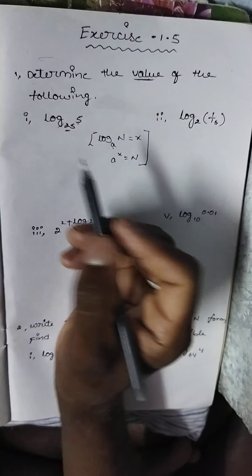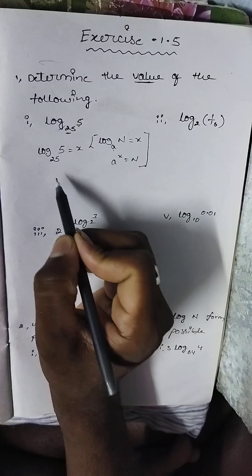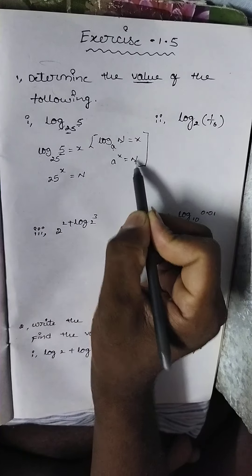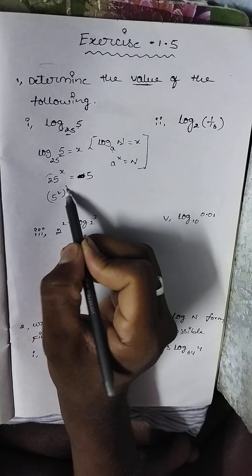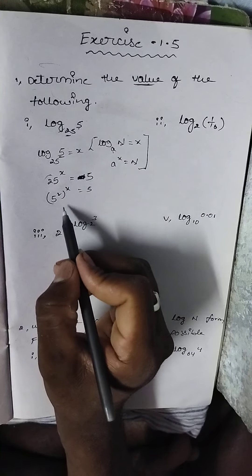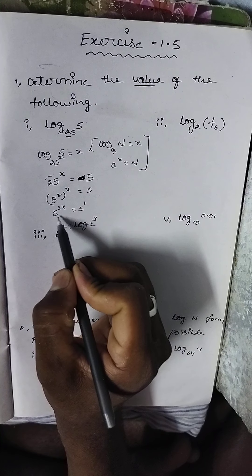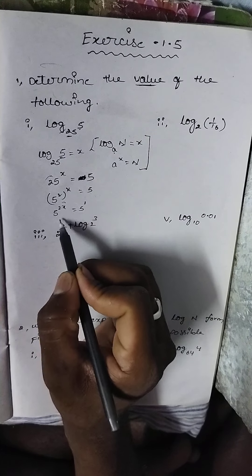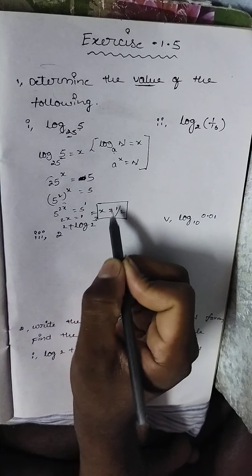For log base 25 of 5 equals x, the formula gives 25 to the power x equals 5. Writing 25 as 5 squared: (5²)^x = 5, so 5^(2x) = 5^1. Since bases are equal, exponents are equal: 2x = 1, therefore x = 1/2. This is the required value.